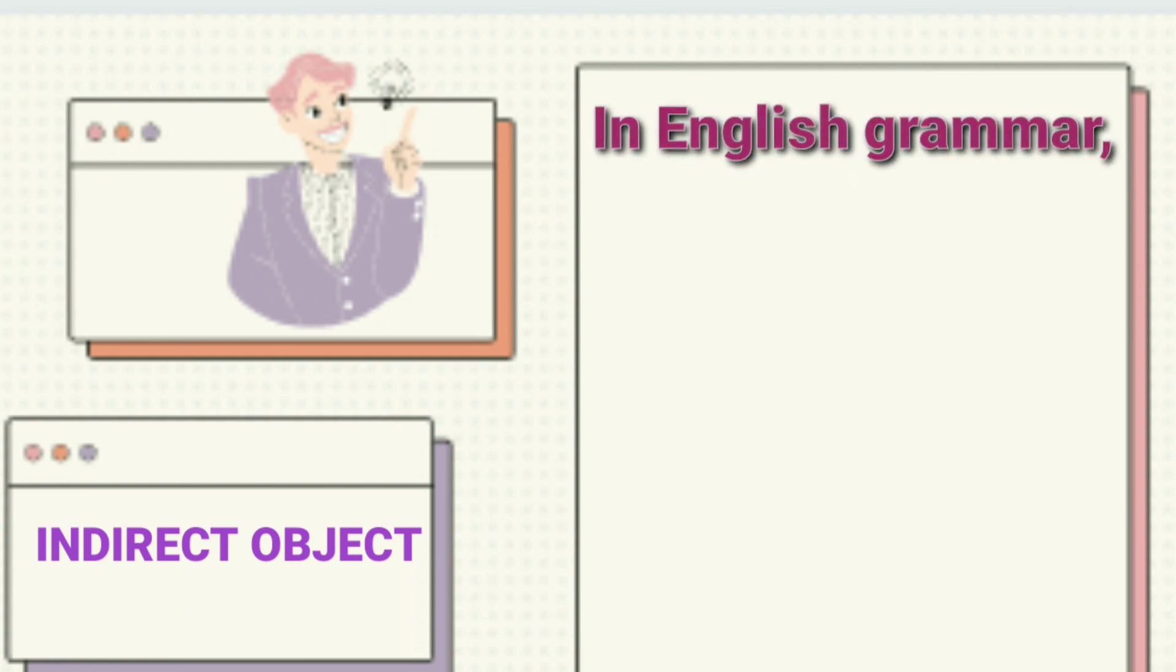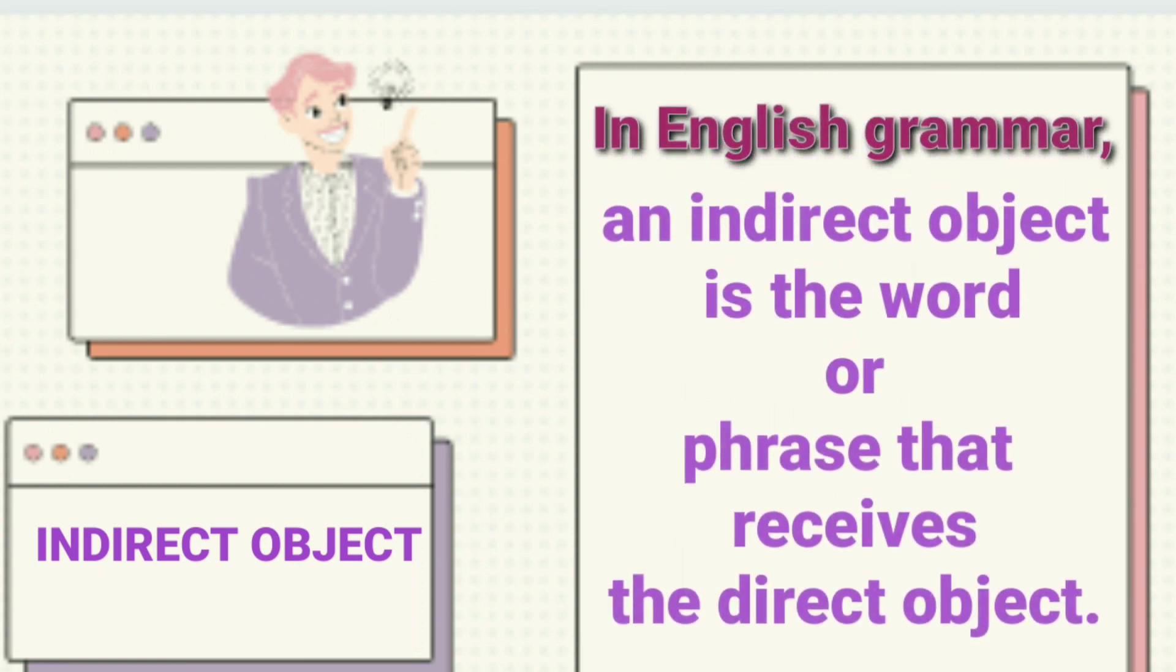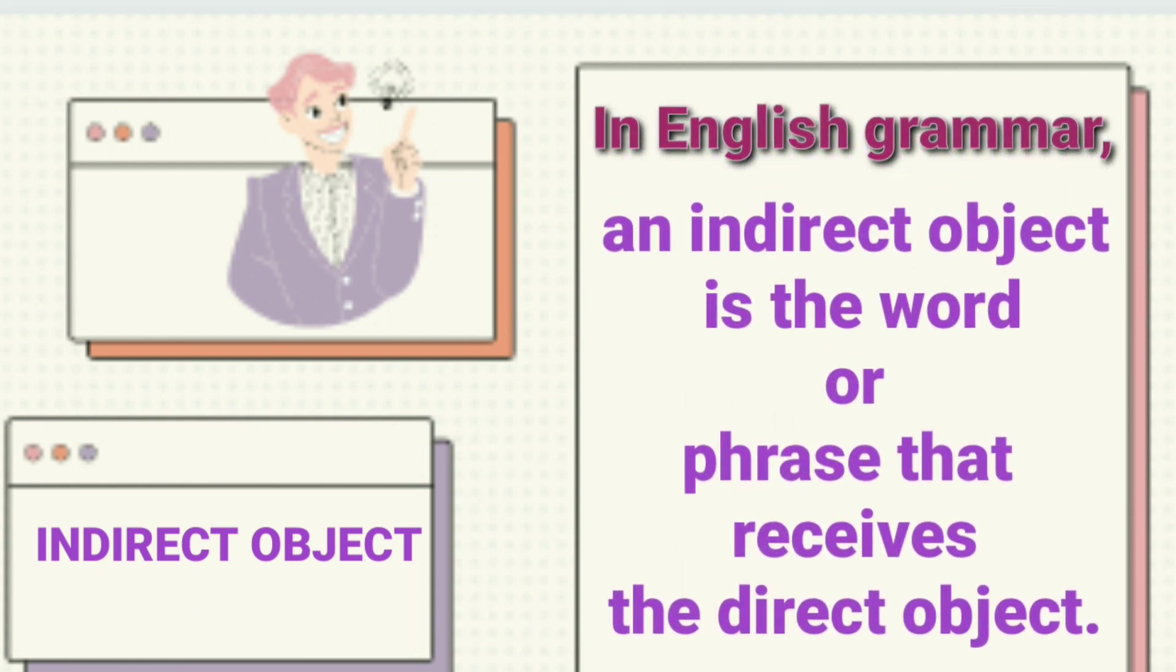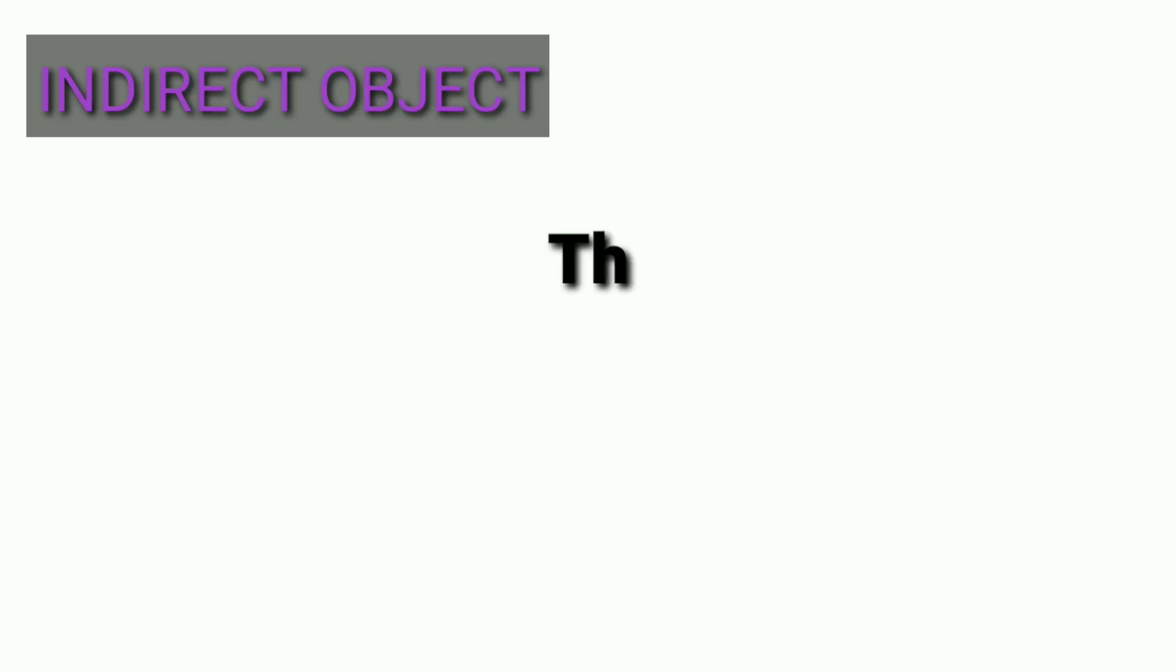Indirect object. What is an indirect object? In English grammar, an indirect object is the word or phrase that receives the direct object. Example sentence: The teacher gave the student cake.